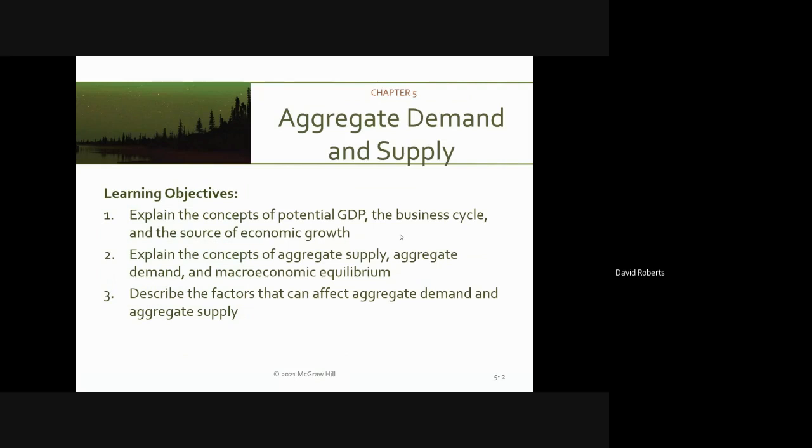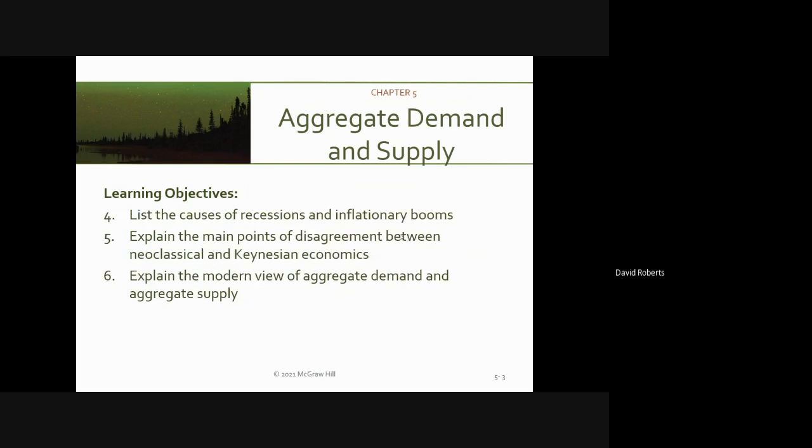We're going to look again at GDP, which is of course a big part of macroeconomics. We're going to look at aggregate supply and aggregate demand and the equilibrium point, factors that affect them, recessions and inflation, and some disagreements between neoclassical economics and John Maynard Keynes. Keynesian economics revolutionized how people look at economics, and some people still subscribe to his point of view.